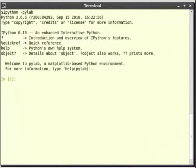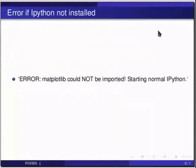After running ipython-pylab in the shell you will see some information about IPython and pylab followed by the in1 prompt. But if you get an error like 'matplotlib could not be imported starting normal ipython,' then you will have to install matplotlib and run this command again.